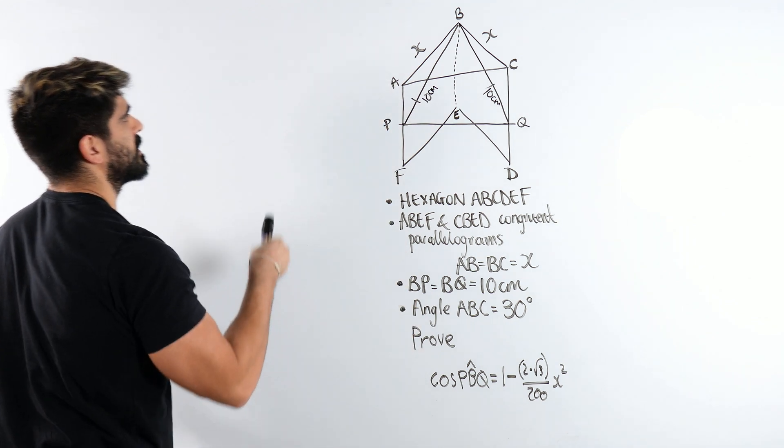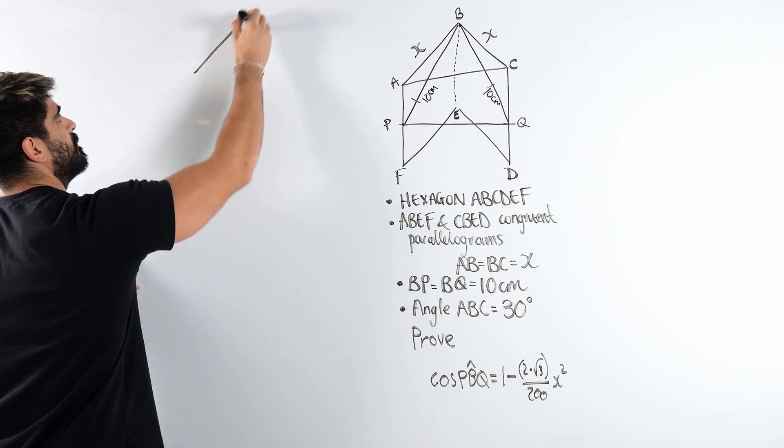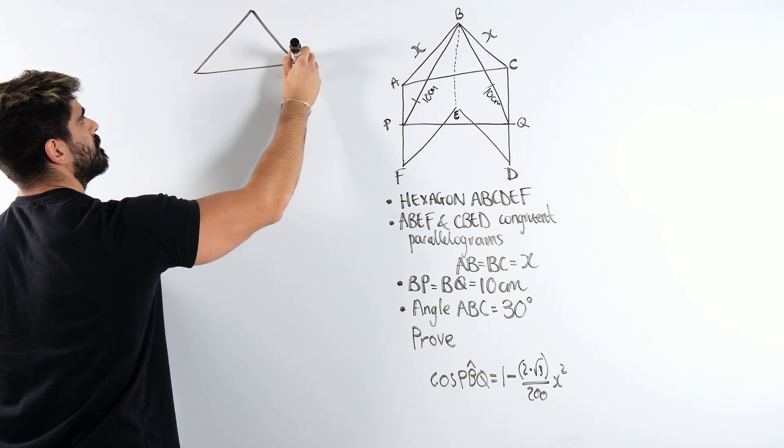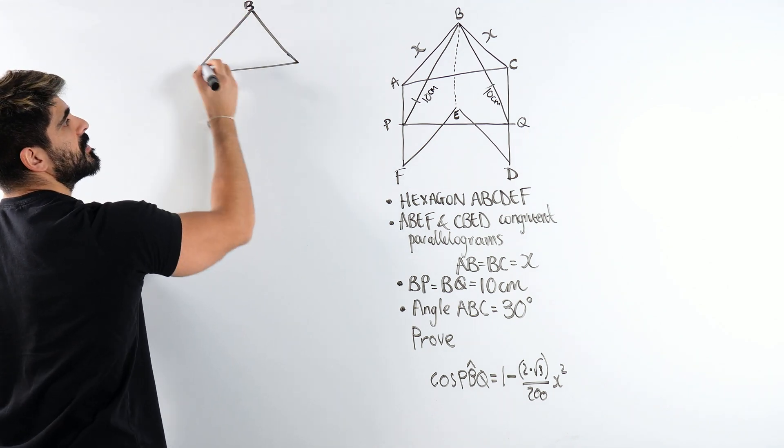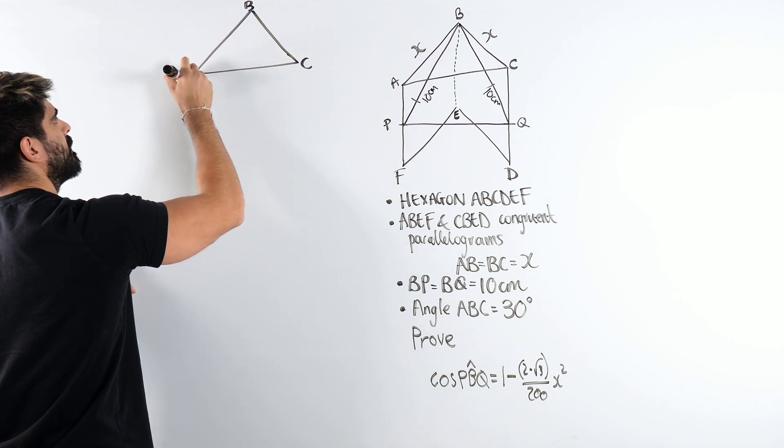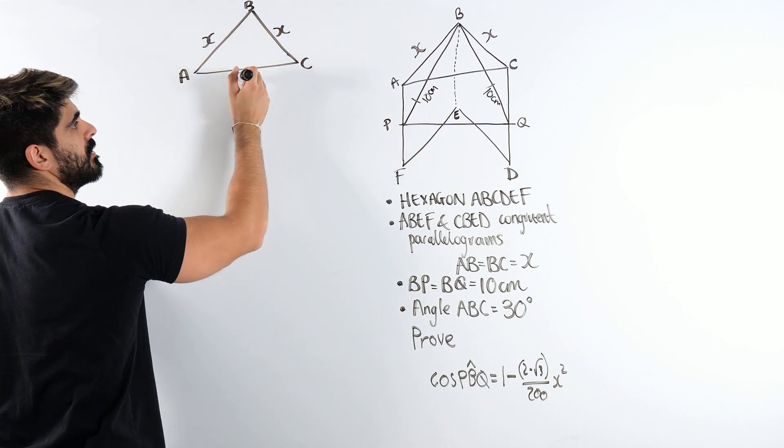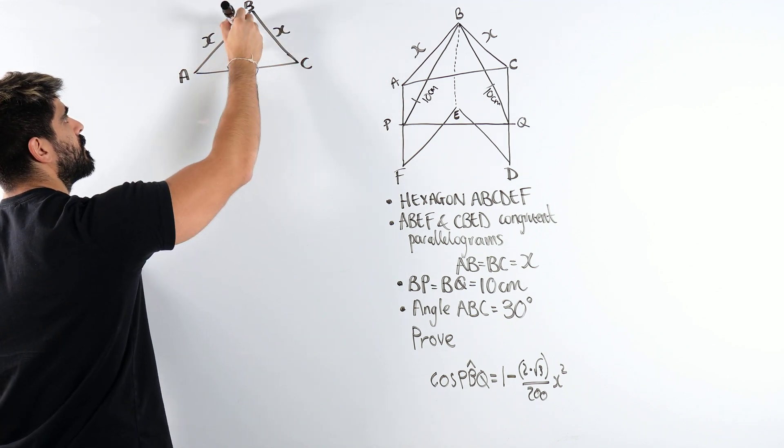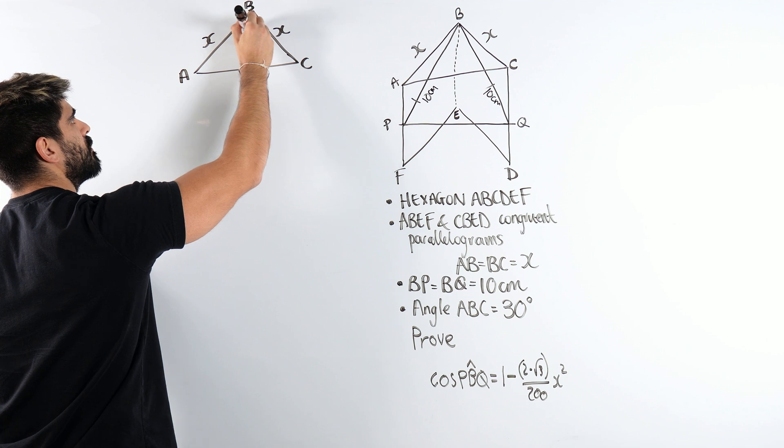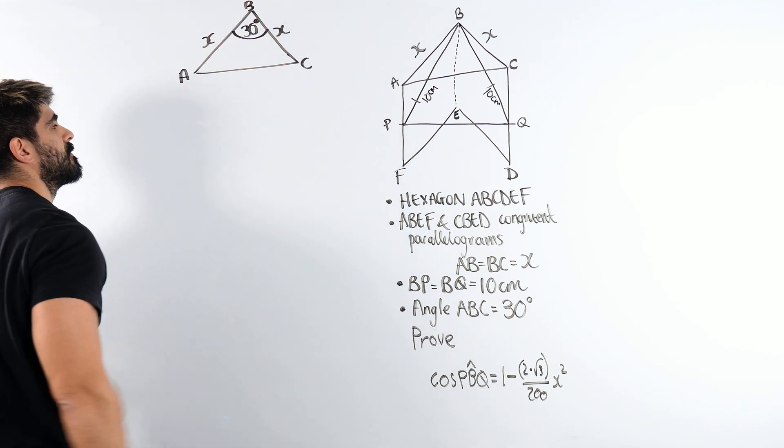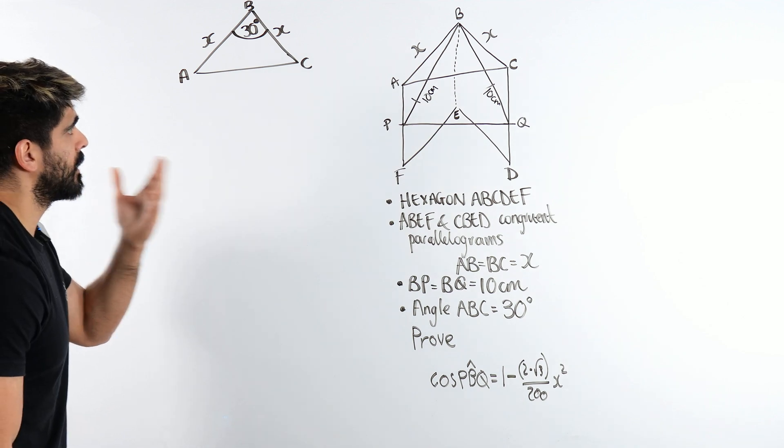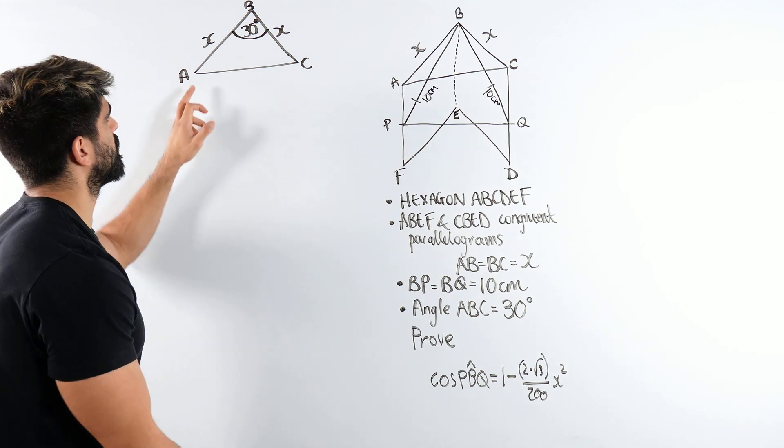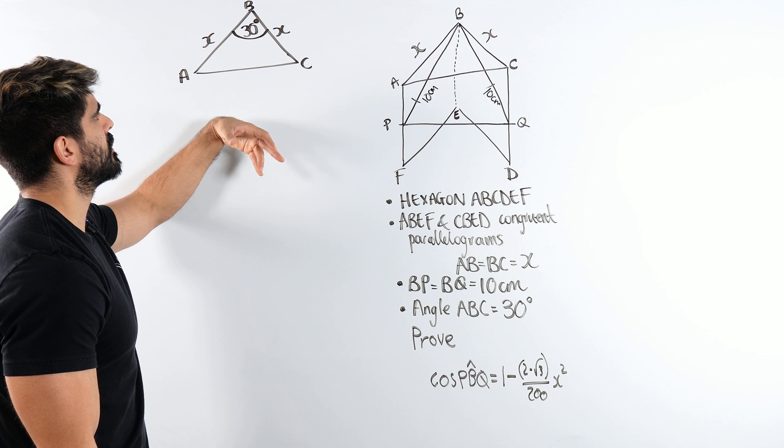So let me just redraw that triangle so you guys can see it better. We have B, C, A. We have X, X. We have this length, which I don't know. And we have this angle, 30 degrees. Now we're going to use the cosine rule to work out what this length is.